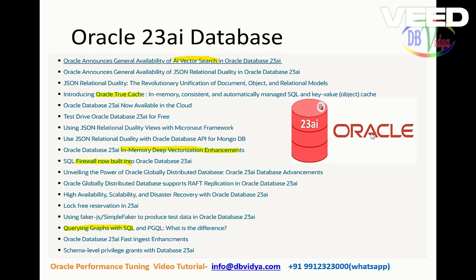Hello friends. Recently Oracle has released Oracle 23AI, which was previously Oracle 23C. Now they have named it as 23AI, meaning Artificial Intelligence. They have released many new features, but we can discuss three or four features which are useful for people giving interviews. Generally in interviews, they will test how updated you are with the latest versions. The interesting new features are Oracle TrueCache, SQL firewall built into the database, pairing graphs with SQL queries, and AI vector search.